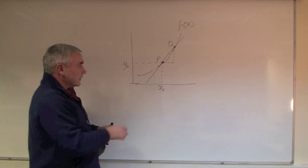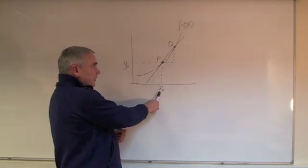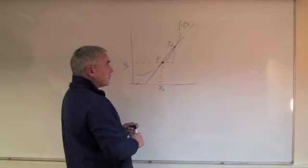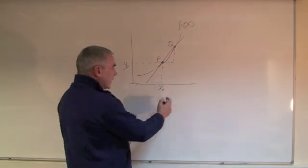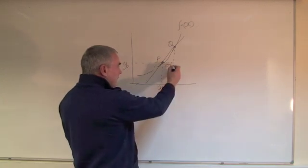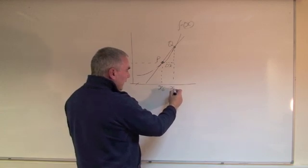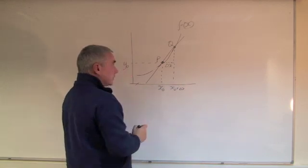From the work that we've done already on various functions, we know that the gradient of the line joining those two points can be found fairly easily. If this is the point X0 and point Q is a little bit further over to the right, if that distance is delta X, then the point will be X0 plus delta X.